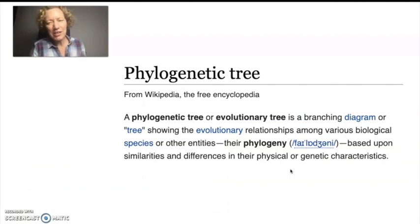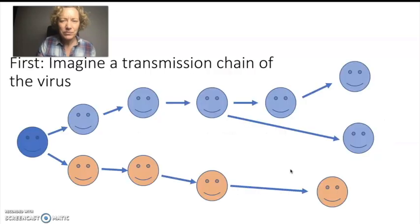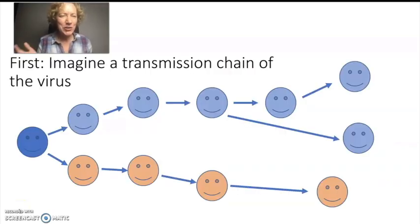So a phylogenetic tree is a branching diagram or tree showing the evolutionary relationships amongst various biological species or other entities. So in this case we're not talking about species, we're talking about samples of viruses. And it's based upon similarities and differences in their physical or genetic characteristics. Here we're looking only at genetic characteristics. For studying the evolution of viruses, it's much easier to look at their genetic characteristics. So imagine a transmission chain of the virus. So initially there's this dark blue person who is infected with the virus, likely in China. And then this person infects two other people and they each infect another person, etc.